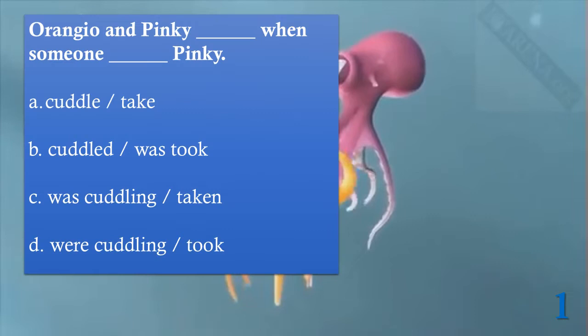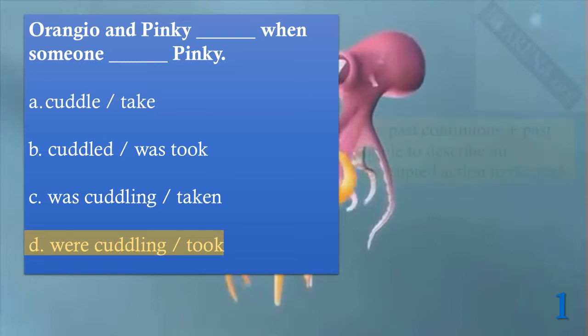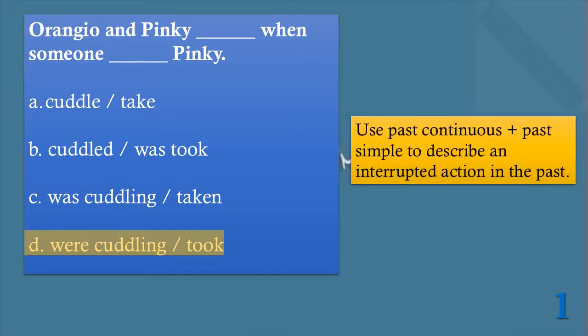Let's do some exercises together with Orangu and Pinky. I have two actions: one was in progress and someone interrupted it. Orangu and Pinky were cuddling when someone took Pinky. So it's an interrupted action — past continuous plus past simple — to describe an interrupted action in the past.